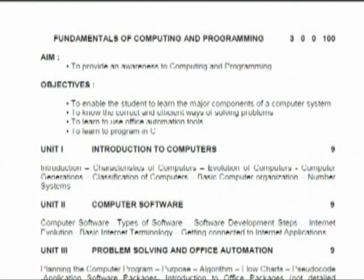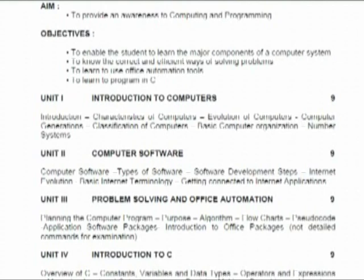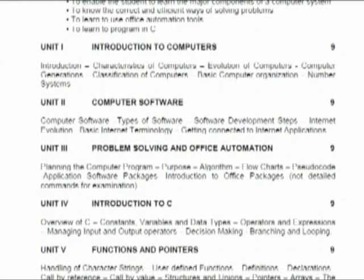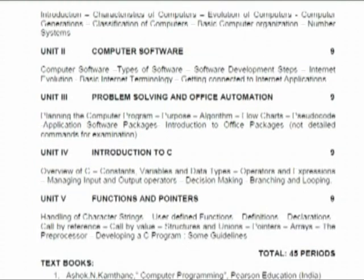This is our syllabus for the first semester. In Unit 1, students study an introduction to computers. Unit 2 covers computer software, including types of software. Unit 3 is problem solving and office automation tools. Unit 4 covers C programming, and Unit 5 covers functions and pointers.